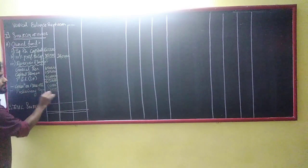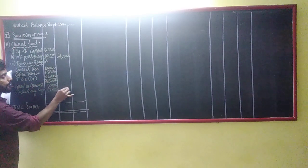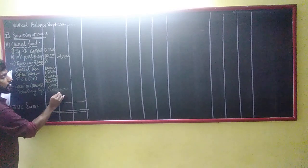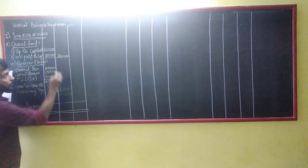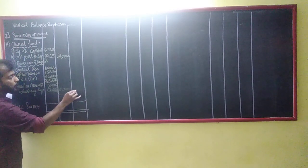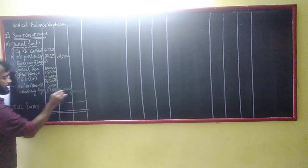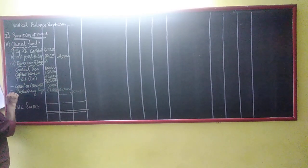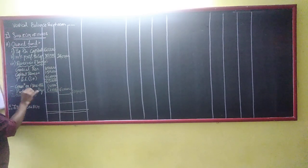So what will happen? 6 lakhs. Now, 24 lakhs plus 6 lakhs, and total own fund is 30 lakhs. I hope I'm clear, everyone.